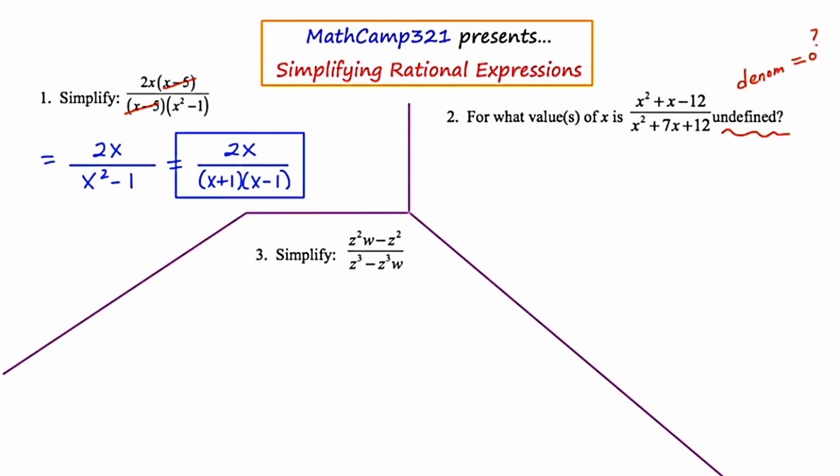So I'm going to start by factoring both the numerator and the denominator completely. Now the numerator is going to factor as x plus 4, x minus 3. The denominator is going to factor as x plus 4, x plus 3.